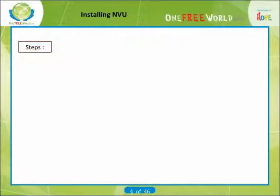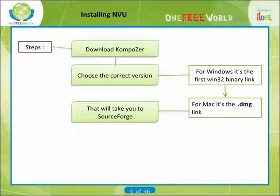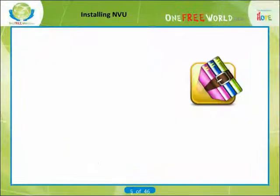You will need to download the Composer program, then you will have to choose the correct version. This will take you to SourceForge.net. You do not have to worry as you will be prompted with a box that indicates you to download the file or click at the top to download. You just have to do that and then download the file to your desktop. Here you are, you have downloaded the Composer program.